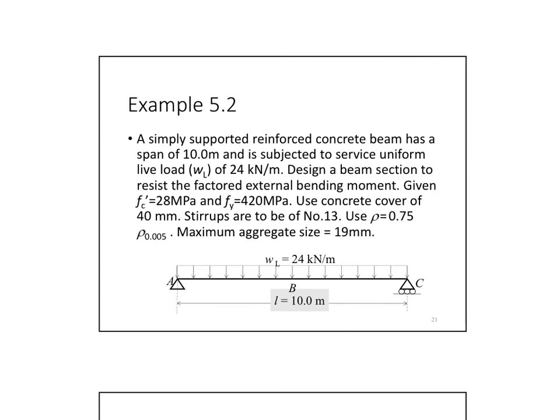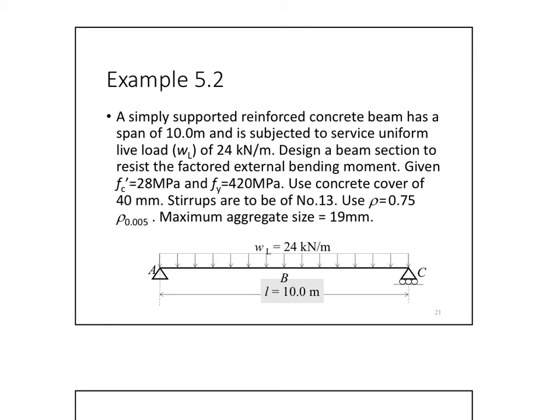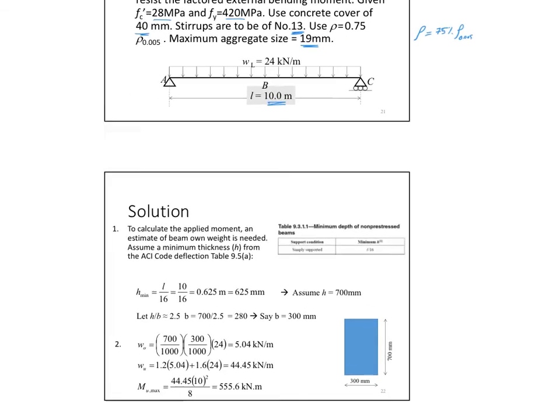Now, knowing B and H, knowing the right B and H, we can update the self-weight that gives us the correct MU. Because we already assumed a number at the beginning and then we continued based on it. Then the same thing, calculate D based on the selected H and obtain the right phi MN. So this check is to revise what numbers you had based on the approximations or the truncations that we did during the selection. Provide a design sketch at the end of your work. Example 5.2. We have a simply supported reinforced concrete beam has a span of 10 meters and is subjected to a service uniform load, WL of 24 kilonewton per meter. Design the beam section to resist the factored external bending moment given. F'C, F yield, and the concrete cover is 40. Stirrups to be used is number 13. So now I know that DSTA is about 13. As a starting point, use rho equals 75% of rho 0.005.